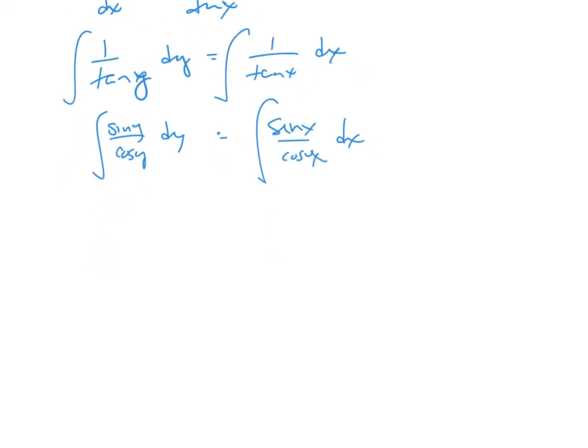I'm going to use a u substitution, so I'm going to say u is equal to cosine of y, so du is equal to sine of y dy, derivative of sine is a positive cosine, so that's good.